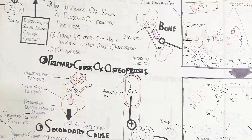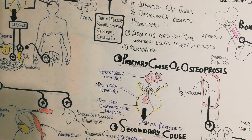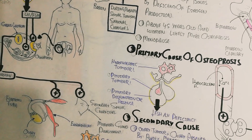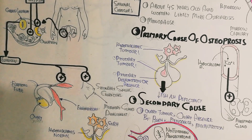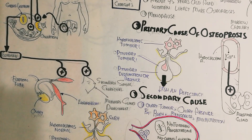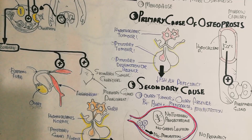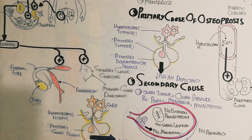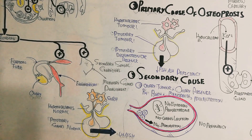In summary, osteoporosis in females is primarily due to low estrogen levels and reduced estrogen quality. Thanks for watching.